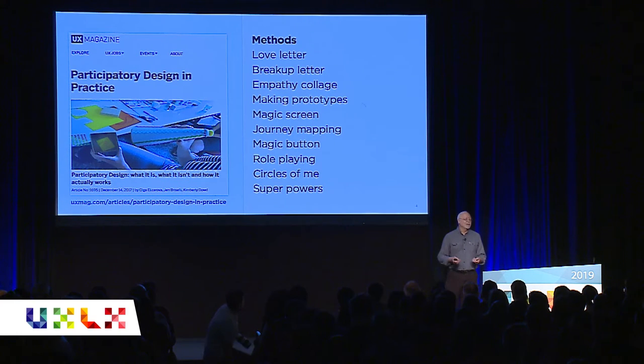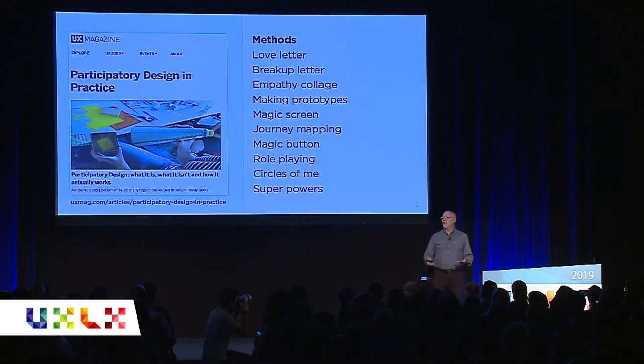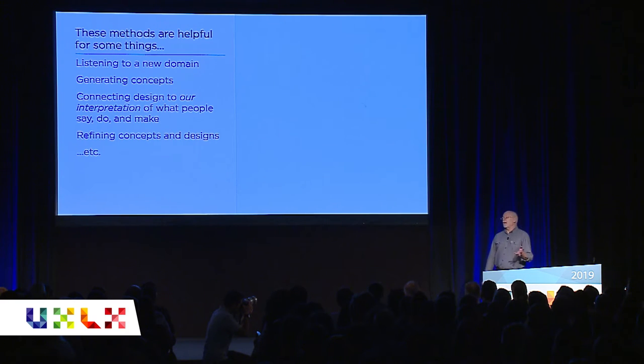So it's interesting — participants are inputs to our process to produce our product. This is fairly typical. You get methods like a love letter, a breakup letter to the product or the company, lots of making activities, prototyping, role-playing. There's a whole body of methods that sometimes gets called co-design, sometimes participatory design. It usually comes in the form of an afternoon or day workshop at a couple of points in the process. Those methods are helpful for some things. There's something Jared Spool is saying about exposure time and surface area of the organization and how that helps a team deliver products that people like and care about. But it isn't real participation.